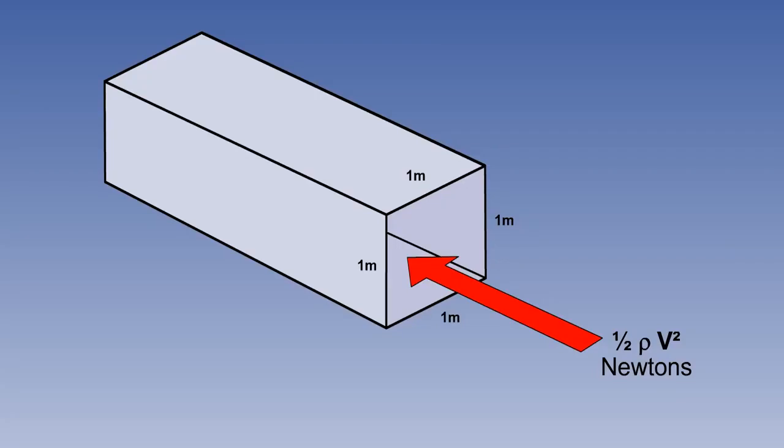If speed is trebled, the pressure increases by 9 times, and so on. If speed is halved, pressure reduces to a quarter of its previous value.